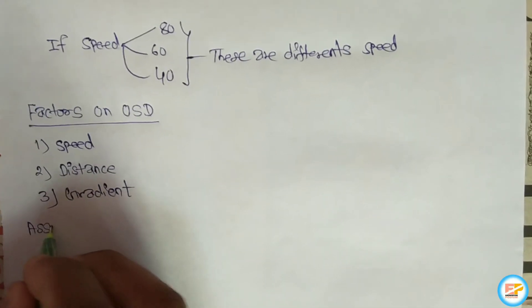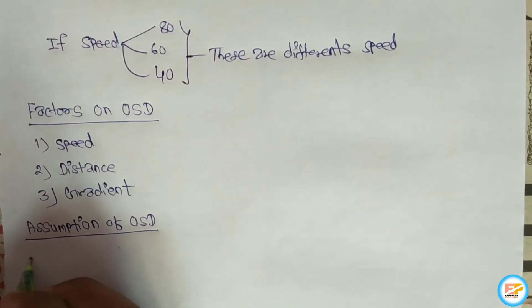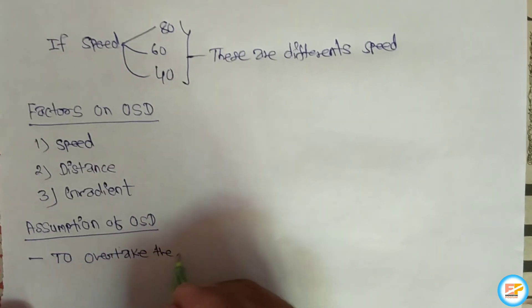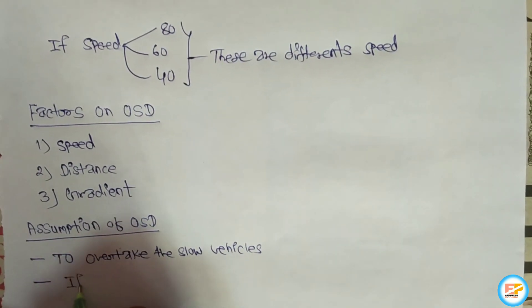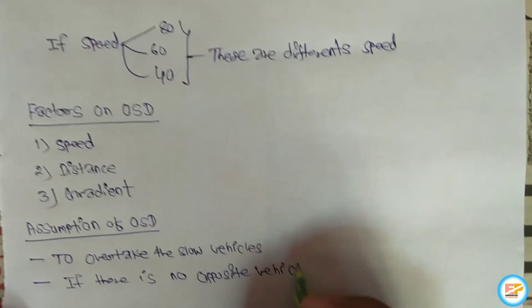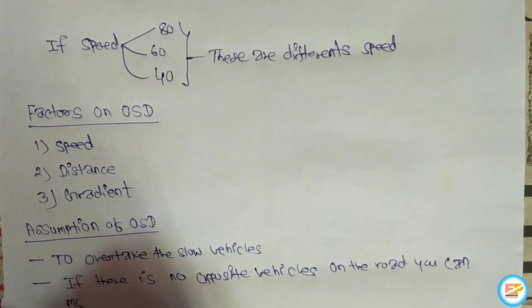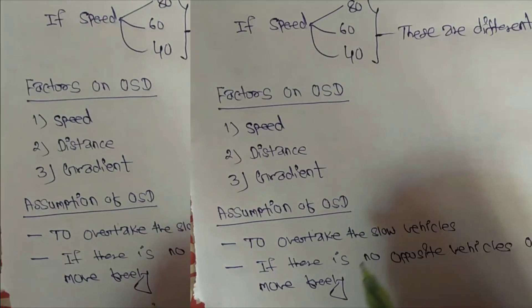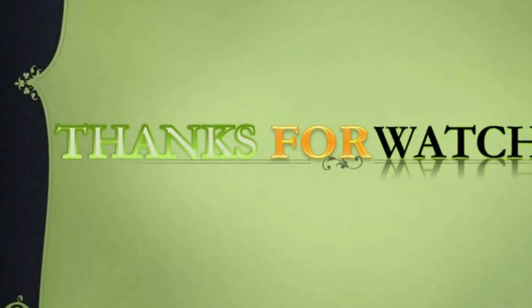Now let's see the assumption of OSD, overtaking sight distance. The assumption is: to overtake the slow moving vehicle, if there are no opposite vehicles on the road, you can move freely and cross freely. This is the assumption, and the derivation will be covered in the next video. Till then, keep watching and keep supporting us.